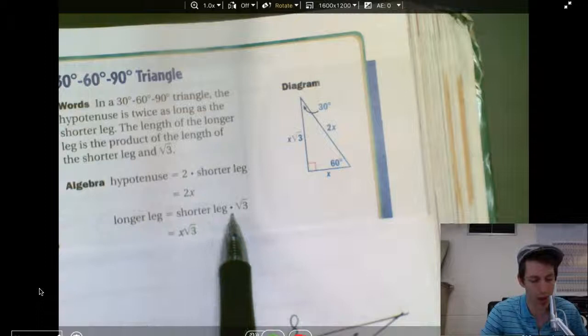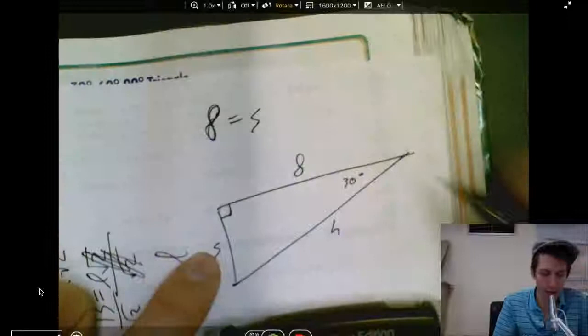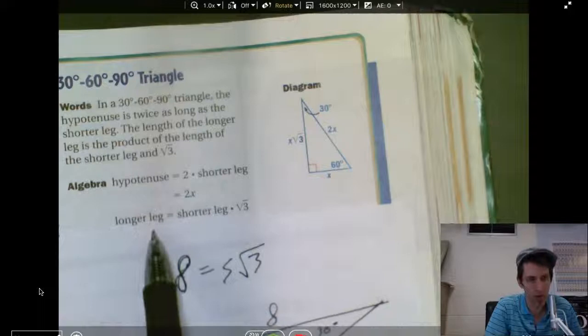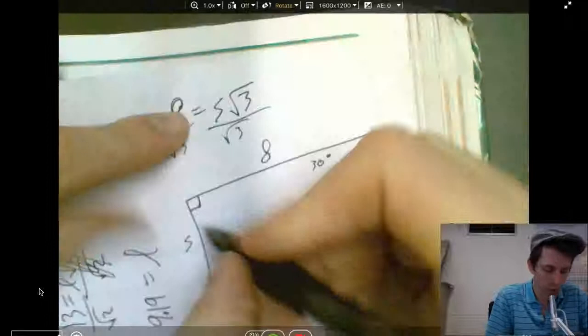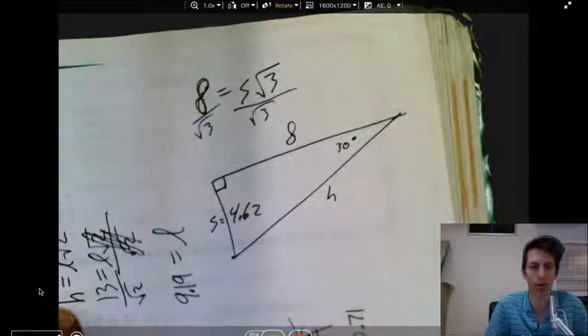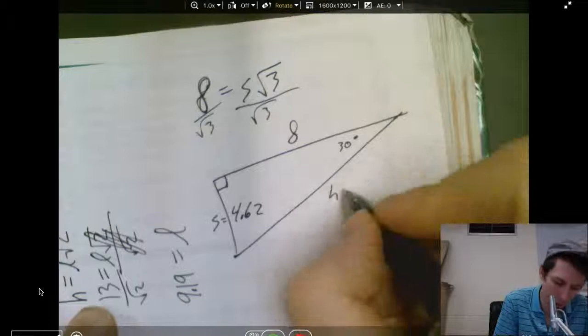So, I'm going to say long leg or 8. That was a funky 8. There we go. Equals shorter leg, which is S, times the square root of 3. I just plugged in this formula right here. Long leg equals short leg times the square root of 3. Now, it's just the same as before. Divide both sides by the square root of 3. Let's see. 8 divided by the square root of 3. 4.62. Okay? So, S down here equals 4.62. Now, how do we figure out the hypotenuse? Well, this is the easy part. Hypotenuse is just double that. So, 4.62 times 2. 9.24. There we go.